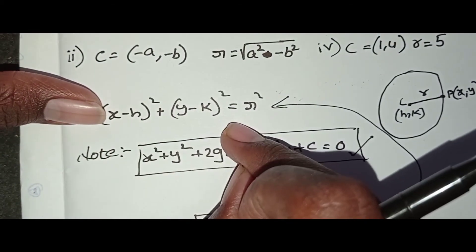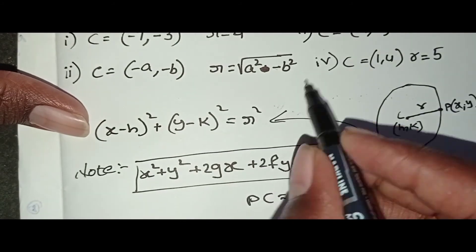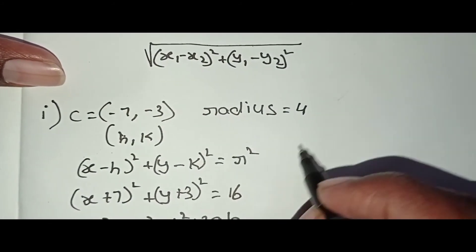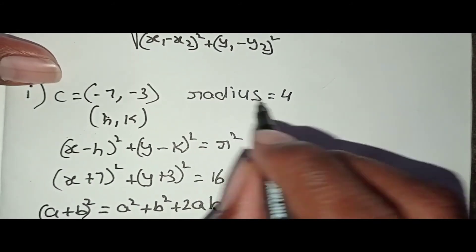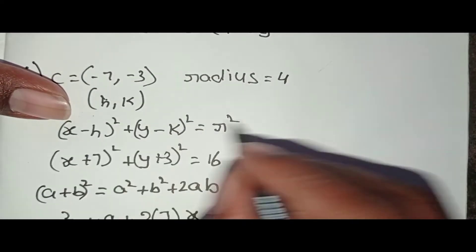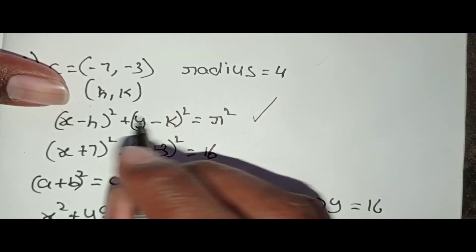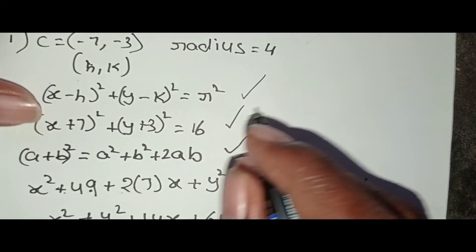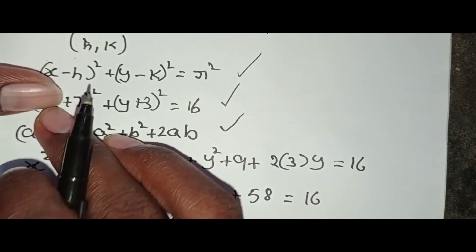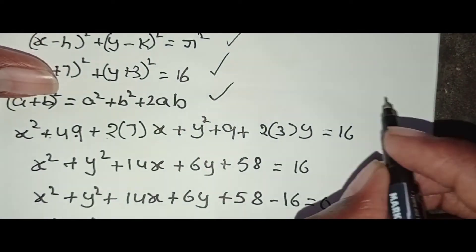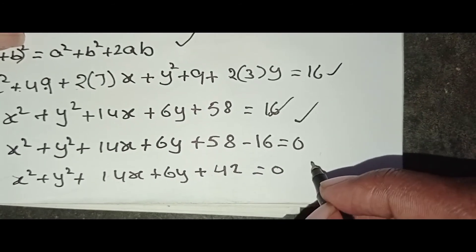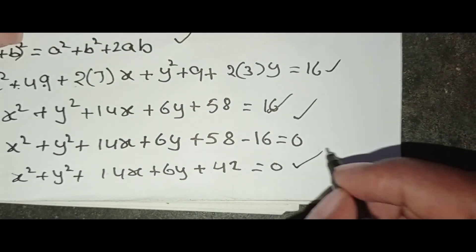Write the center and radius, substitute into the formula, and use the (a + b)² or (a − b)² whole square formula to expand and solve the equation of the circle.